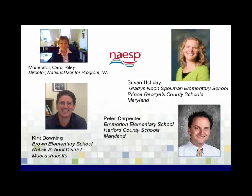We also have Kirk Downing with us today. Kirk is a graduate of the University of Colorado Boulder where he earned a bachelor's degree in history and a master's degree in curriculum and instruction. He taught and was an assistant principal in Cherry Creek School District in Aurora, Colorado. Kirk moved to Massachusetts in 2007 where he is a principal at Brown Elementary School in Natick, Massachusetts. Kirk is the Middlesex County Director for the Massachusetts Elementary School Principals Association and is also an NAESP Certified Principal Mentor.